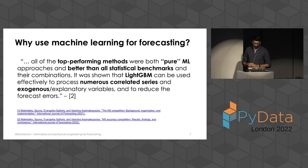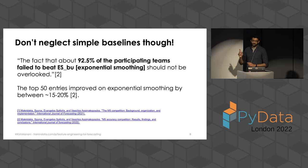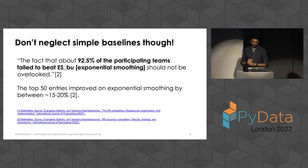These are some of the reasons why you might want to use a machine learning model for forecasting. That doesn't mean you should neglect simple statistical baselines, though — 92.5% of participating teams failed to beat one of the simplest statistical models, exponential smoothing. Even the top 50 entries only beat exponential smoothing by between 15% to 20%, depending on the level of granularity. So you really have to make sure that the uplift from using a machine learning approach warrants the additional complexity.